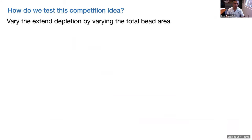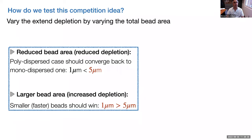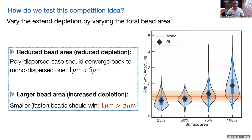To test this competition idea, we varied the total bead area. Reducing bead area means less depletion from bulk, so we'd expect to recover the monodispersed trend. Increasing bead area should give one micron beads the win. We did exactly this experiment and saw the predicted trend: as you decrease surface area, the ratio of one-micron to five-micron absorption goes down and the trend reverses, confirming the competition model.